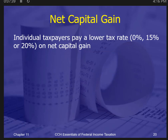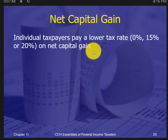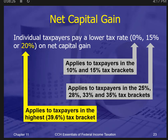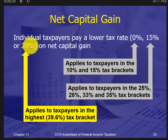This is where it gets important for your clients: they pay a lower tax rate on net capital gain than on ordinary income. There are three tax brackets for capital gains that apply based on the taxpayer's ordinary income tax bracket. There's quite a difference — if you normally pay 10% on ordinary income, you pay 0% on capital gains. 28% ordinary drops to 15%, and 39% drops to 20%. It's clearly advantageous to have income classified as a capital gain.